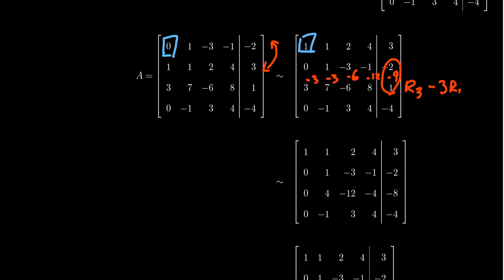That takes care of the first column — everything below the pivot is now zero. Ignoring the first pivot row and column, we look for the next pivot, which will be in the second column. This puts the pivot position at the 2-2 position. It's non-zero, so let's start zeroing things out below it.